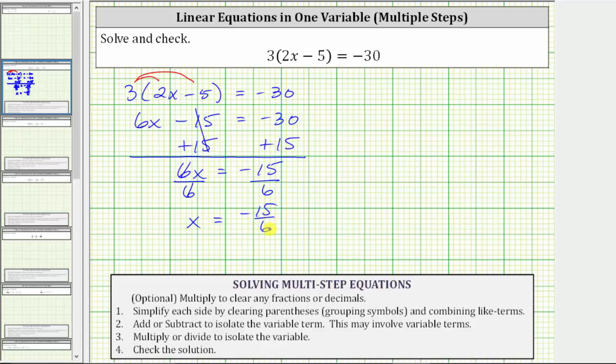But this fraction does simplify. The greatest common factor between 15 and six is three. To simplify, we divide the numerator and denominator by three. Simplifying, we have x equals negative 15 divided by three is five. Six divided by three is two. We have x equals negative 5 halves as the solution to the equation.